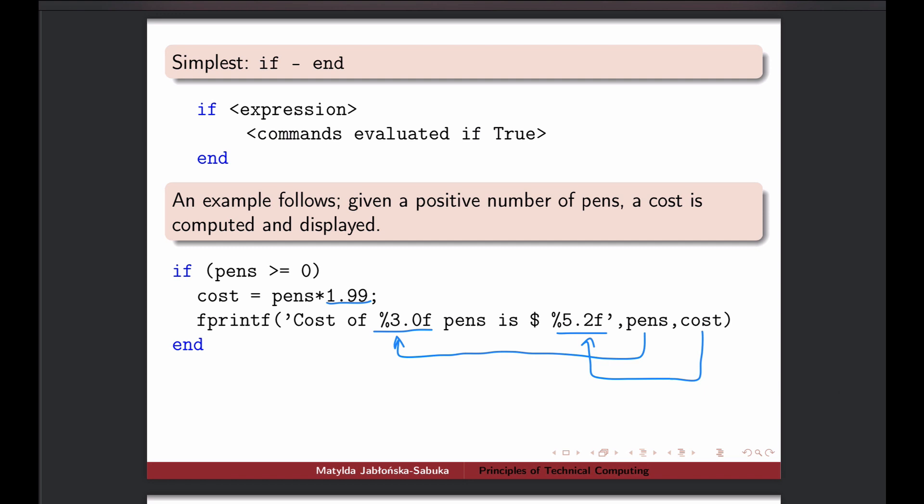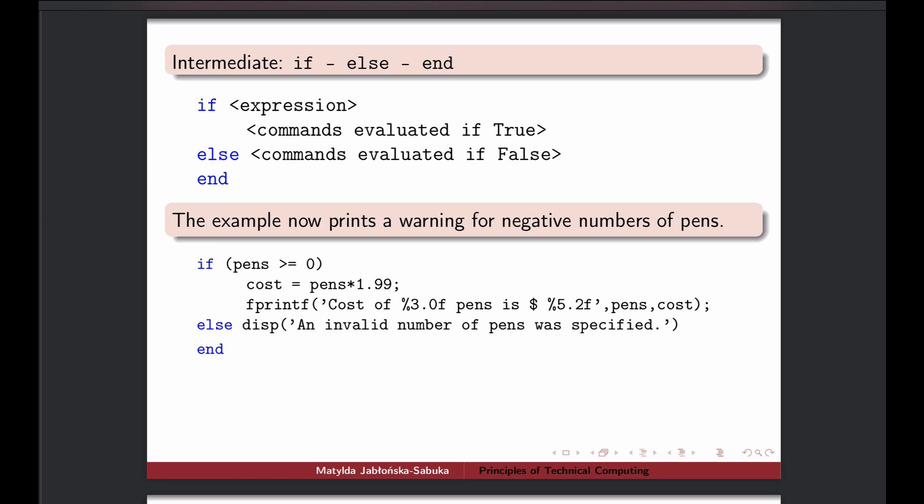So that was a simple if case. Quite often we want to have some alternative. So in this example, we have again that if number of pens is positive, or at least non-negative, then we can calculate cost of the pens, again as the amount times the cost per unit, and we can display the result.